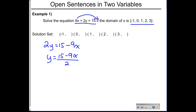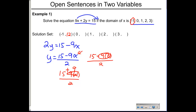Now substitute each domain value. For X = −1: (15 − 9(−1)) / 2 = (15 + 9) / 2 = 24 / 2 = 12, giving the solution (−1, 12). For X = 0: (15 − 0) / 2 = 15/2, which we leave as the improper fraction. For X = 1: (15 − 9) / 2 = 6 / 2 = 3.